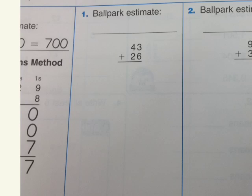The first thing you're going to do before you try this new method is make your estimate, or your ballpark estimate as they call it in everyday math. We worked on this in class, so you should know how to do it. So go ahead and do that now. 43 is closest to 40, 26 is closest to 30, so 40 plus 30 equals 70, and that's your estimate.